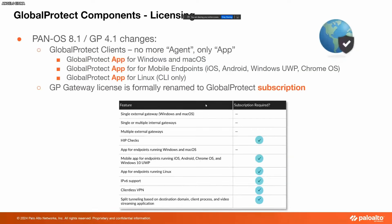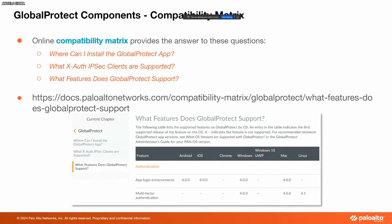Some license concerns: if you need HIP checks, mobile app endpoints for iOS and Android, endpoints for Linux, IPv6 support, or client plus VPN and split tunneling based on domain, process, and video streaming applications, you will need a subscription or a license. Otherwise, you can set up and use GlobalProtect with no license requirements. You might also ask where you can install the GlobalProtect app, which XAuth clients are supported, and what features GlobalProtect supports.